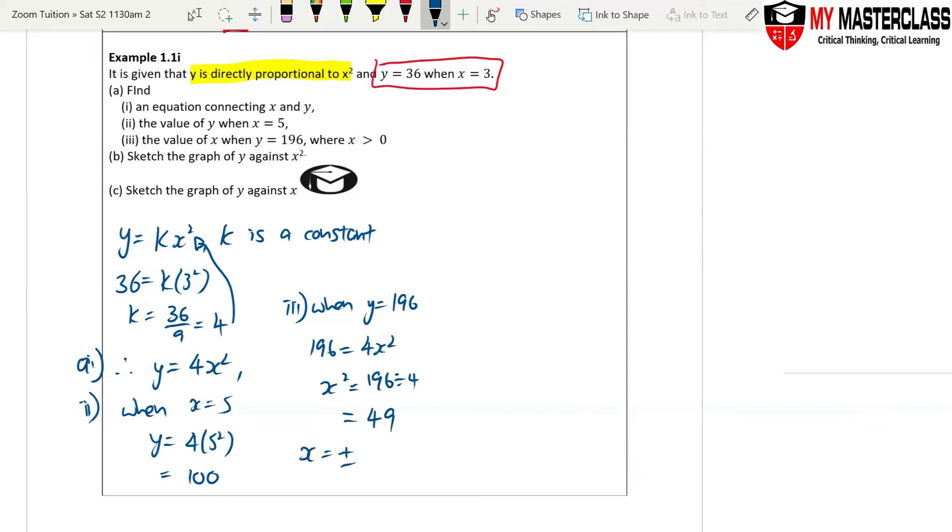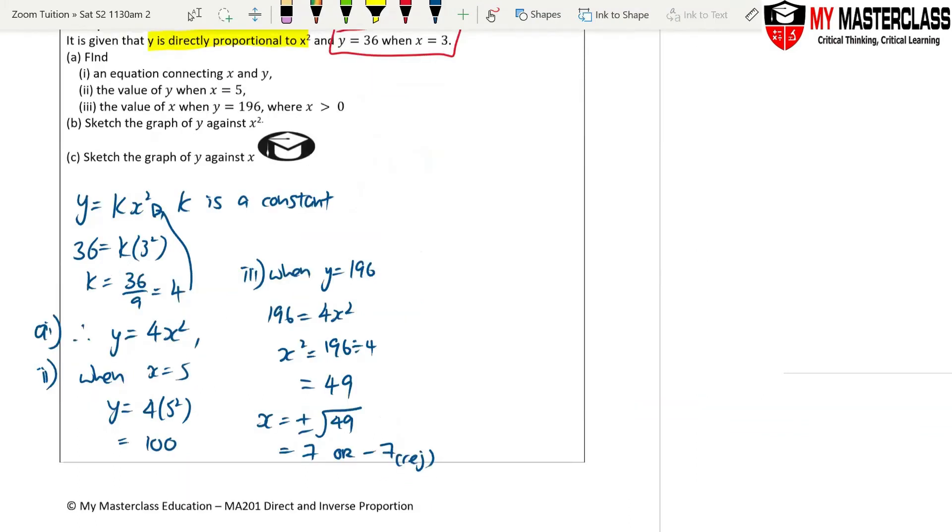So x equals, remember when you square root, you need to have plus minus, which equals 7 or negative 7. This one you reject. Why? Because they say that x must be greater than zero. Pay attention to this.